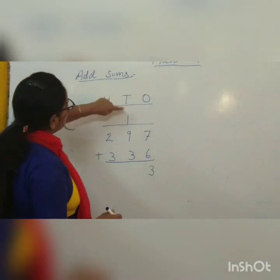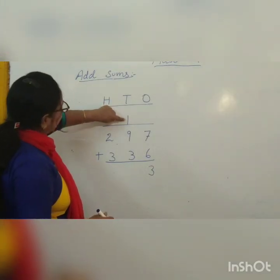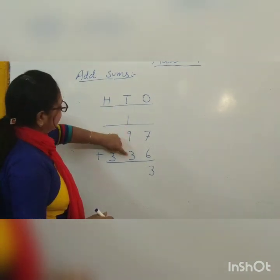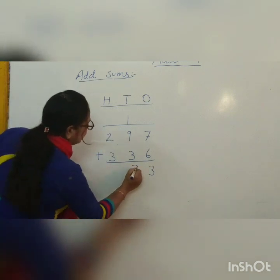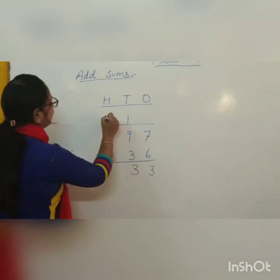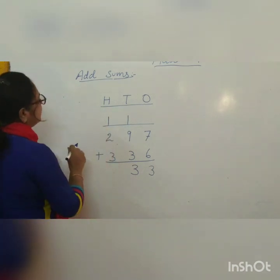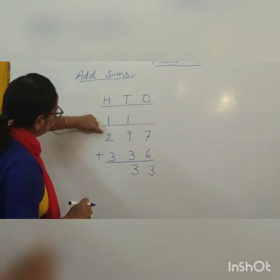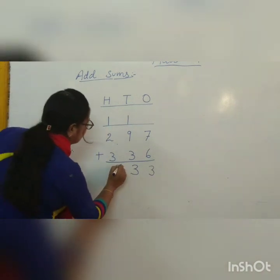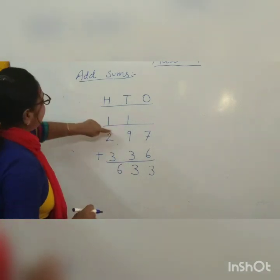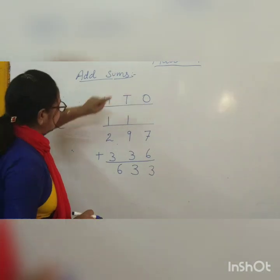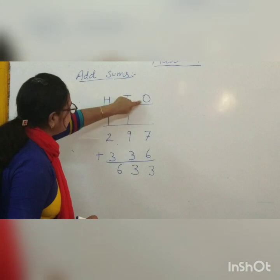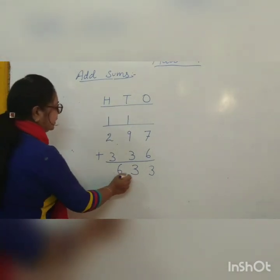Now come to the tens place. 1 carry forward plus 9. 9 plus 1 is 10. Then 10 plus 3 is 13 tens. So 3 is in the tens place and we write 1 at the hundreds place. Now 100 plus 200 plus 300 equals 600. So 2 hundreds, 9 tens, 7 ones plus 3 hundreds, 3 tens, 6 ones becomes 633.